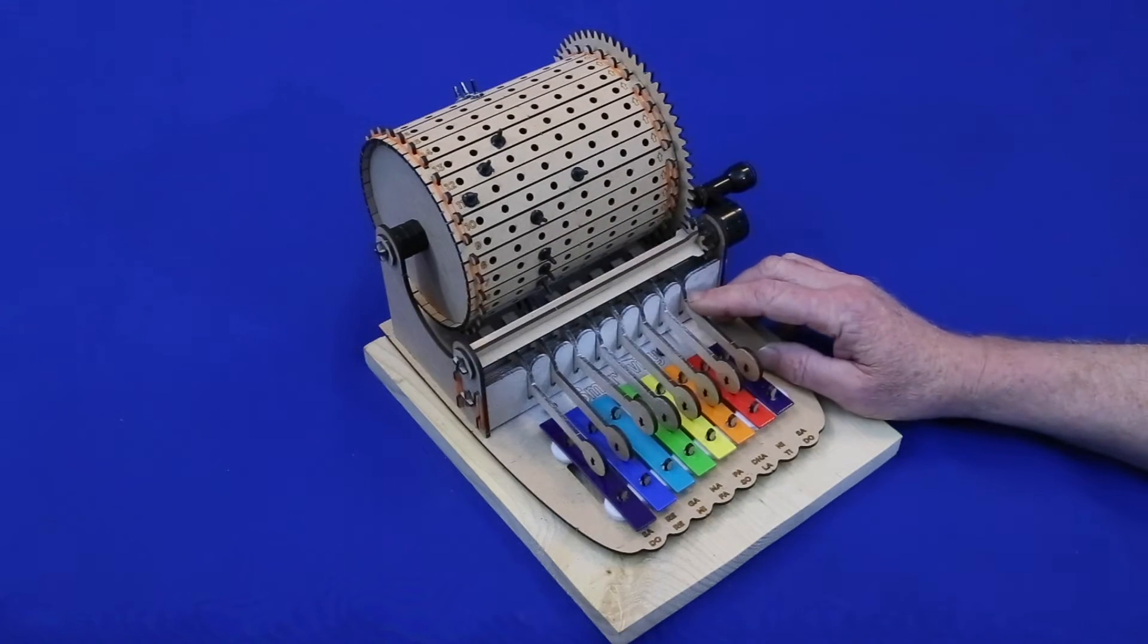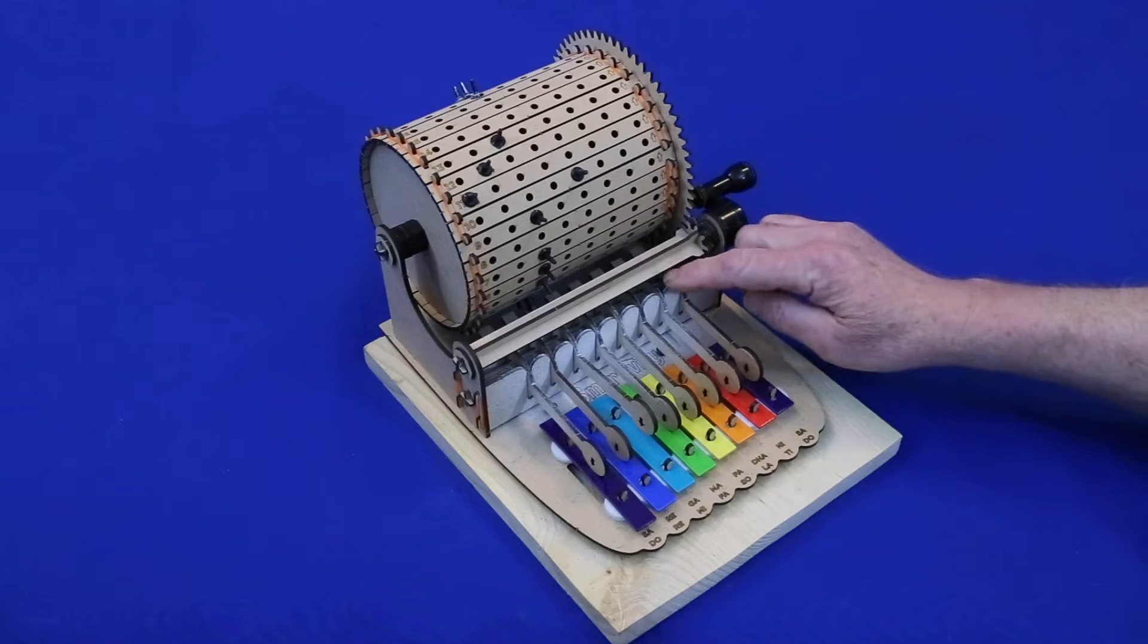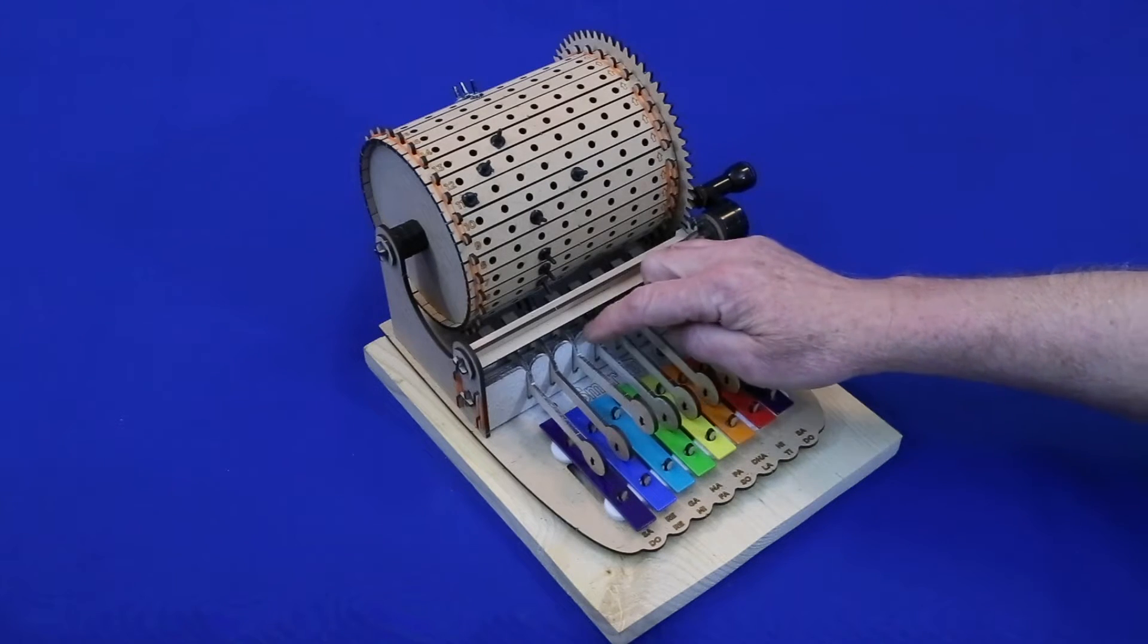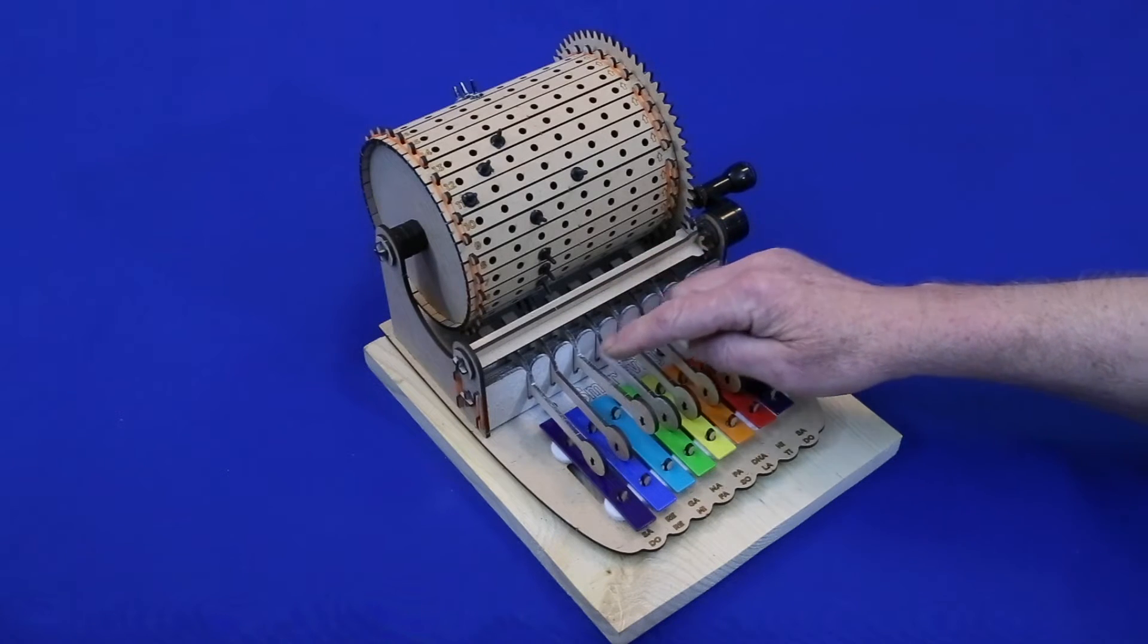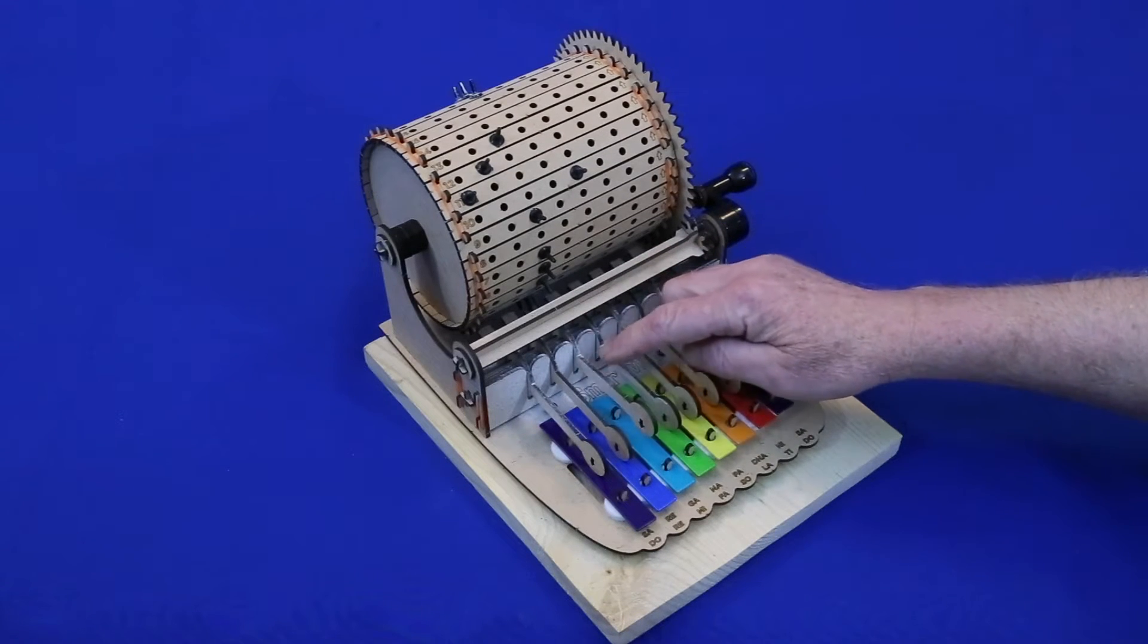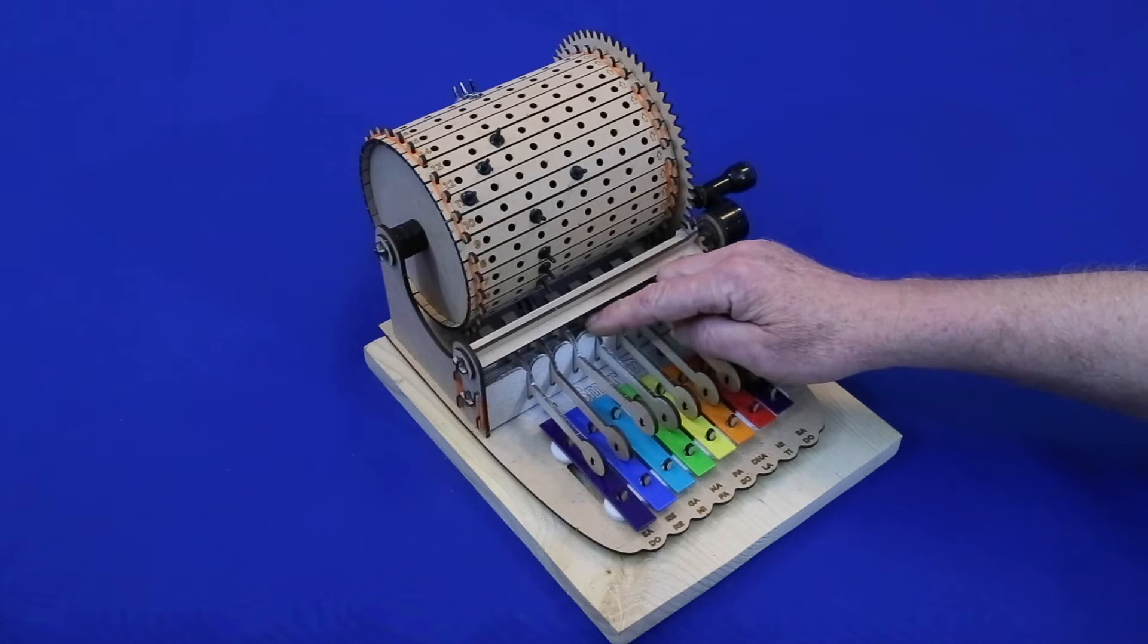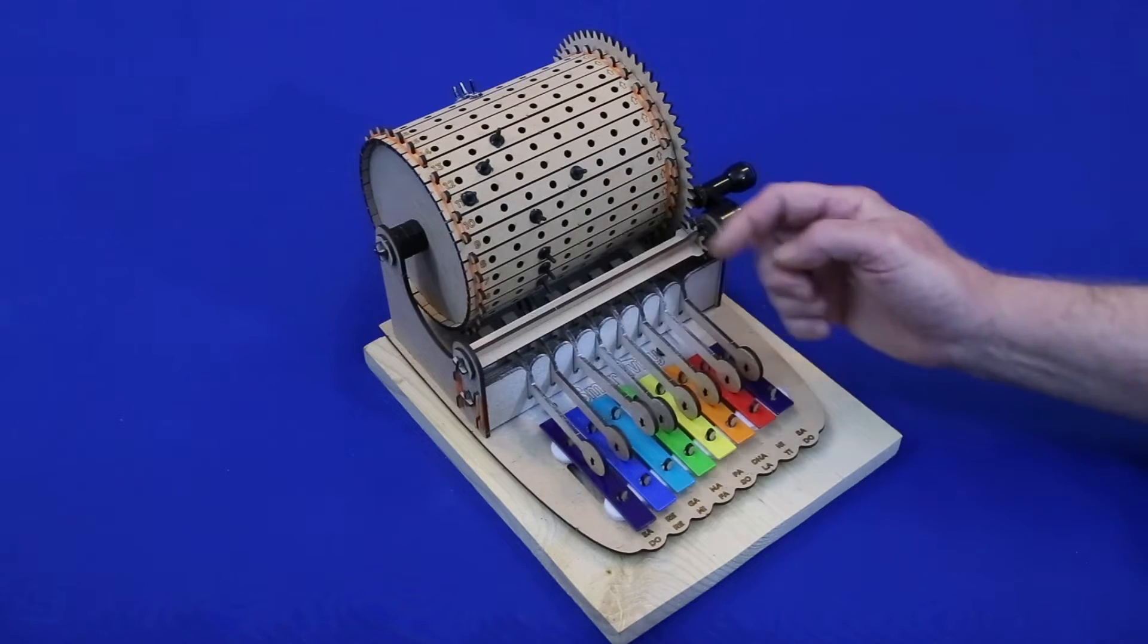The first thing I tried to solve this problem was reducing drag between the armatures and the little guides. So I took the machine apart, sanded it all down, took all the sharp edges off, and coated it with some dry Teflon lubricant. That didn't help.